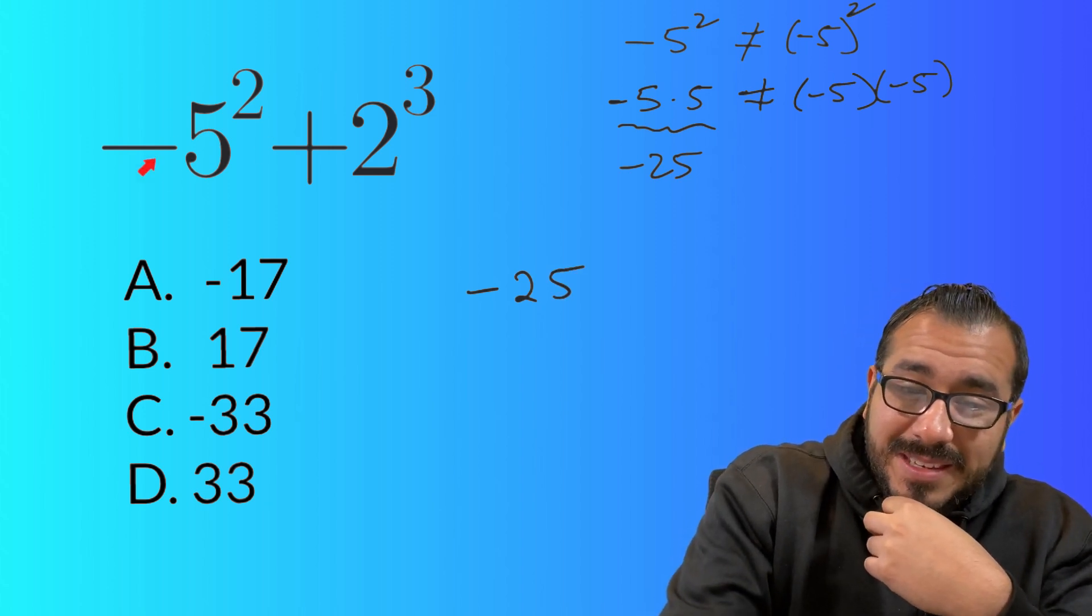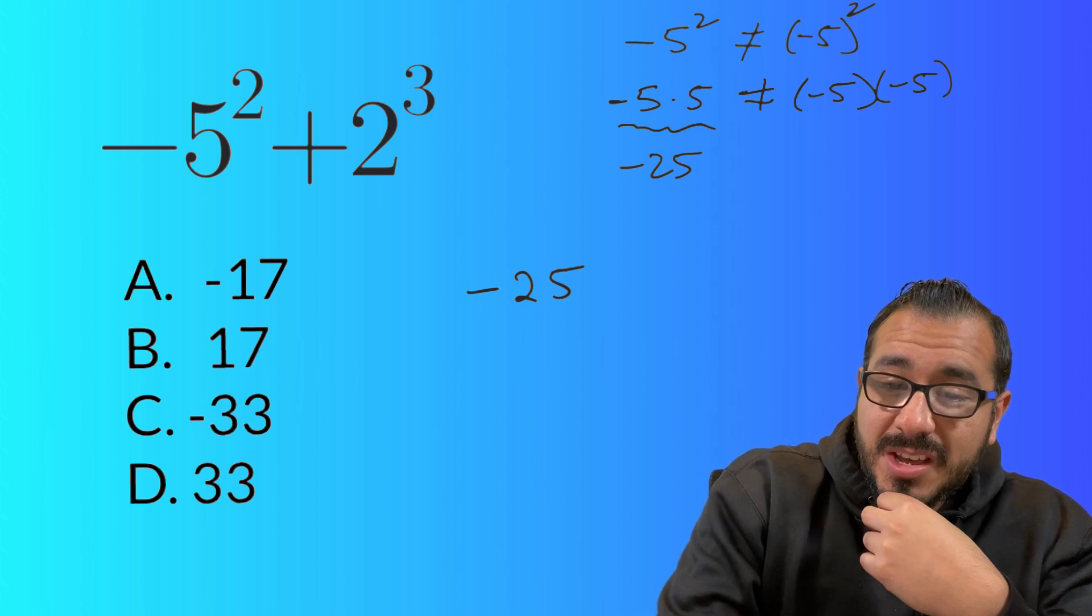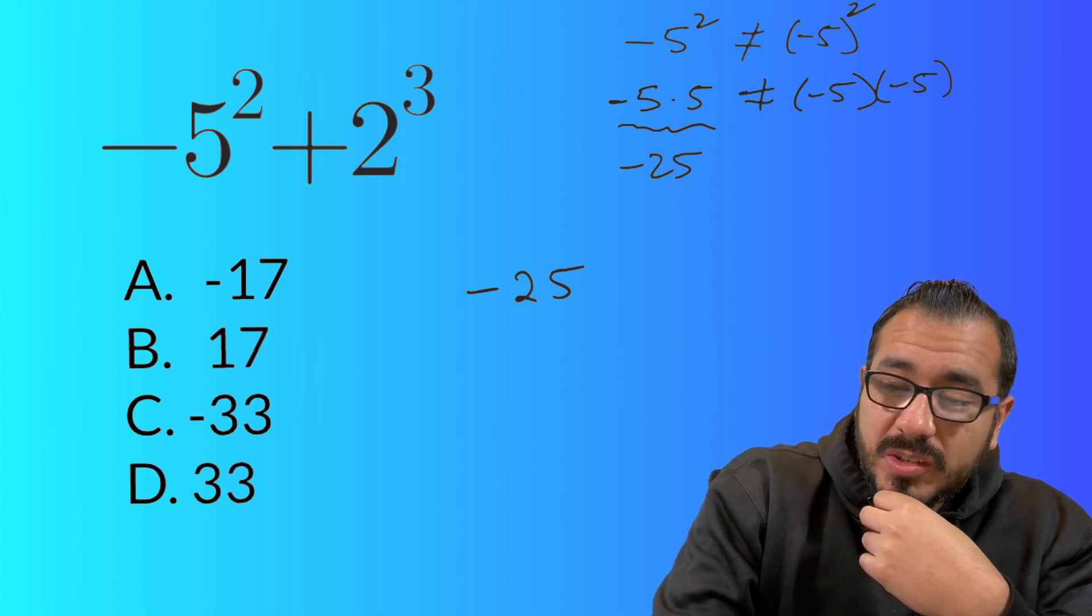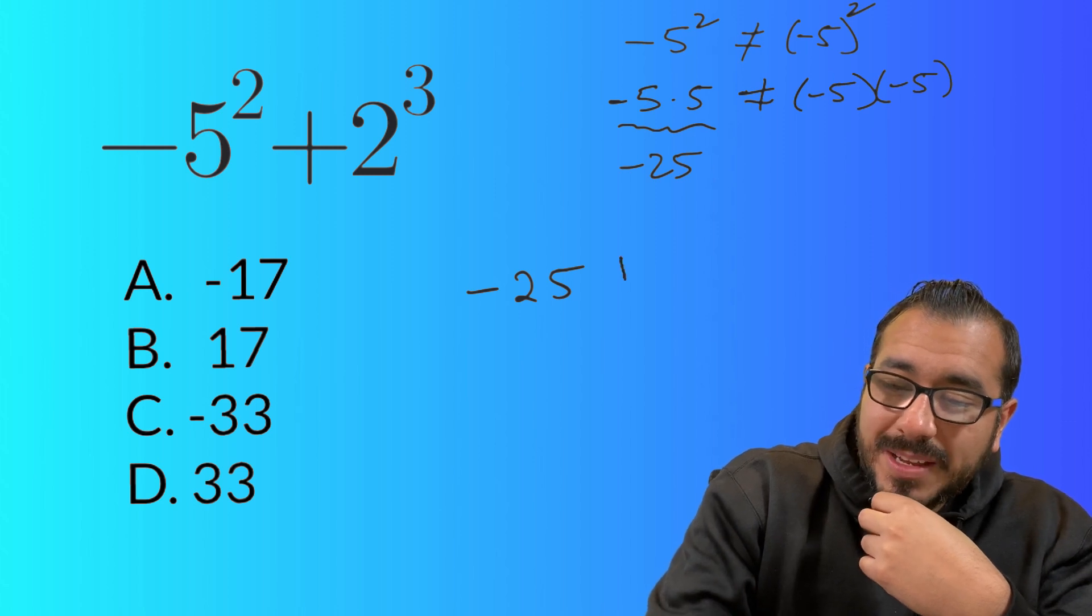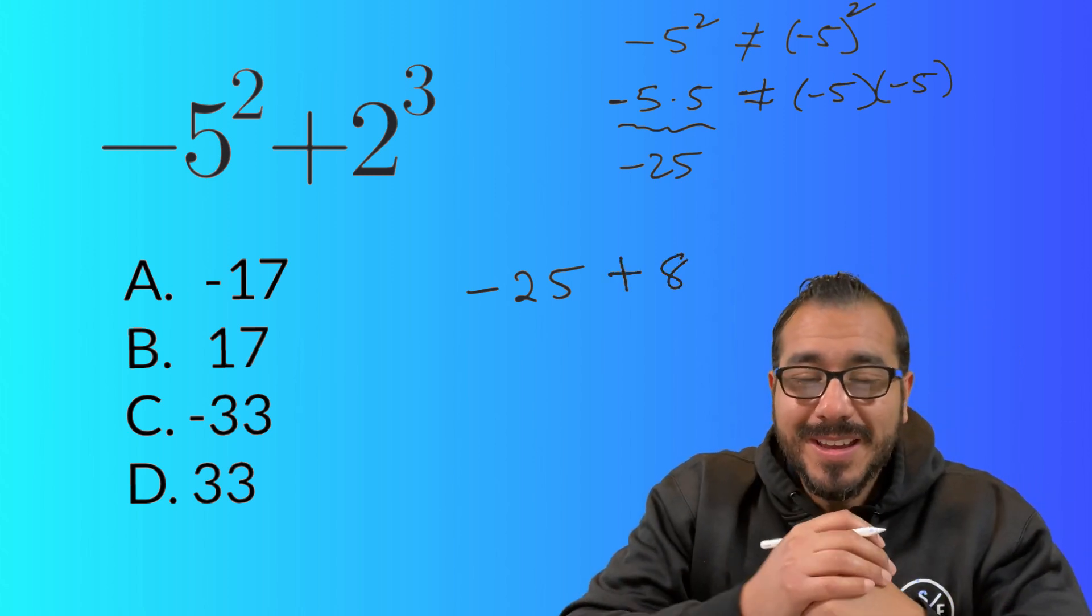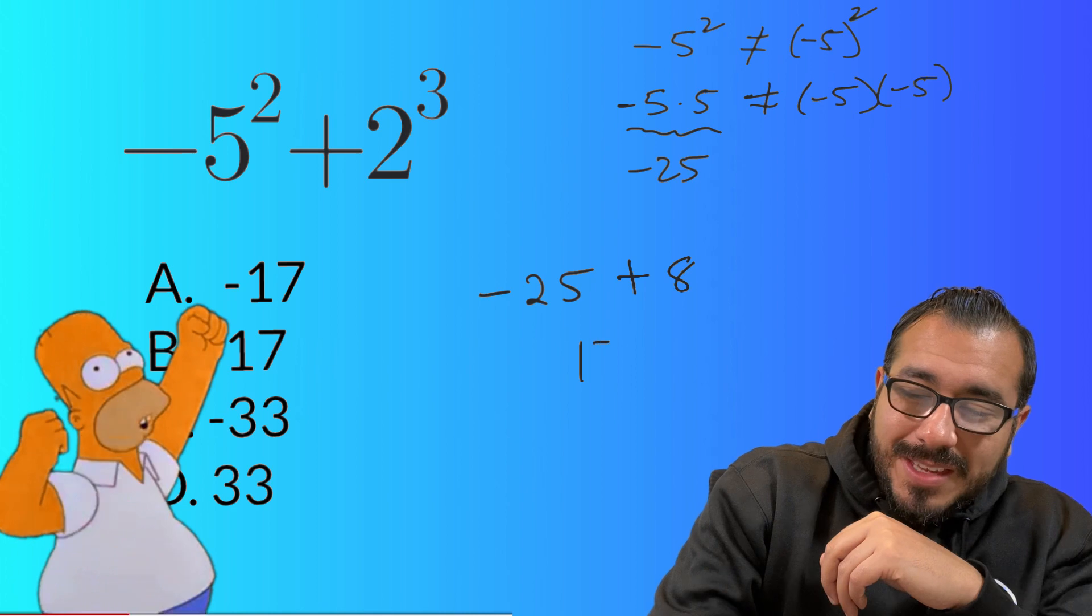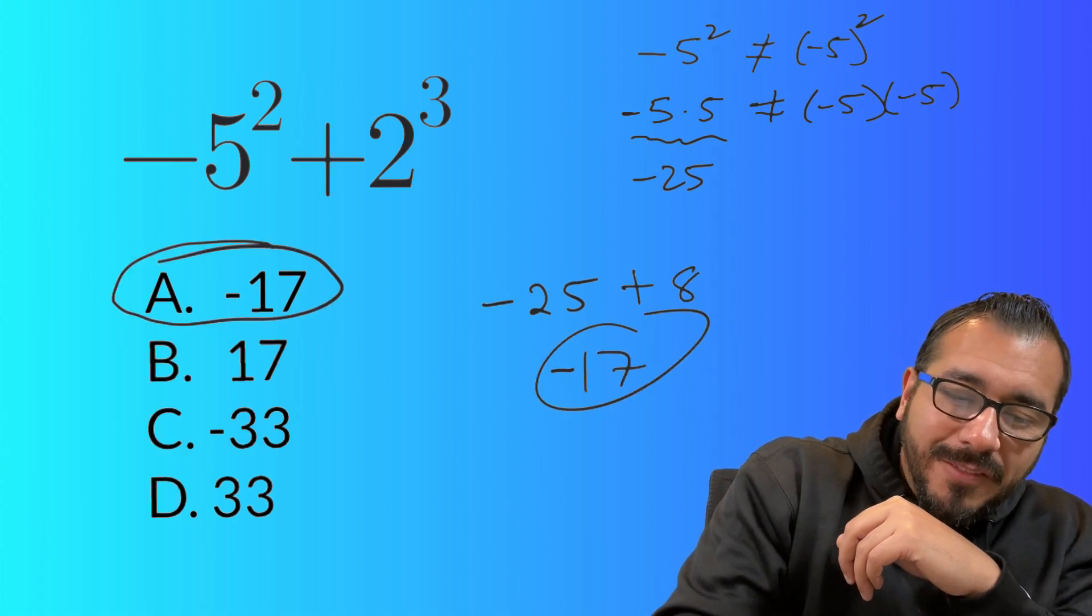Right? That's the case that we have plus two times two times two, which is eight. Let's get a regular pencil in there. So plus eight. All right. So then we have negative 17 and we have our answer right there.